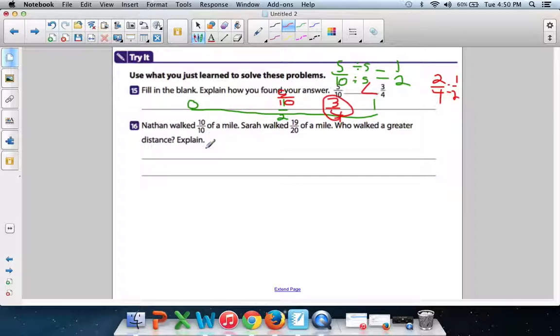Last one. Nathan walked 10 out of 10, 10-tenths of a mile. Sarah walked 19-twentieths of a mile. Who walked a greater distance? Explain. This is easy. You know why this is easy? Because 10 out of 10, what is 10 out of 10? What does it mean when the top and bottom number are the same thing? That means whatever shape you're dealing with, square, circle, however the pieces are split up, it doesn't matter. That means 10 out of 10, that means every single piece is shaded in. That means the whole thing is shaded in.